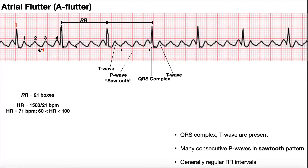Here's the first one, here's the second, here's the third, here's the fourth. There's actually four of them in between each QRS complex. When you have this sawtooth pattern — sawtooth waves, also called delta waves — that is a dead giveaway that you've got atrial flutter.